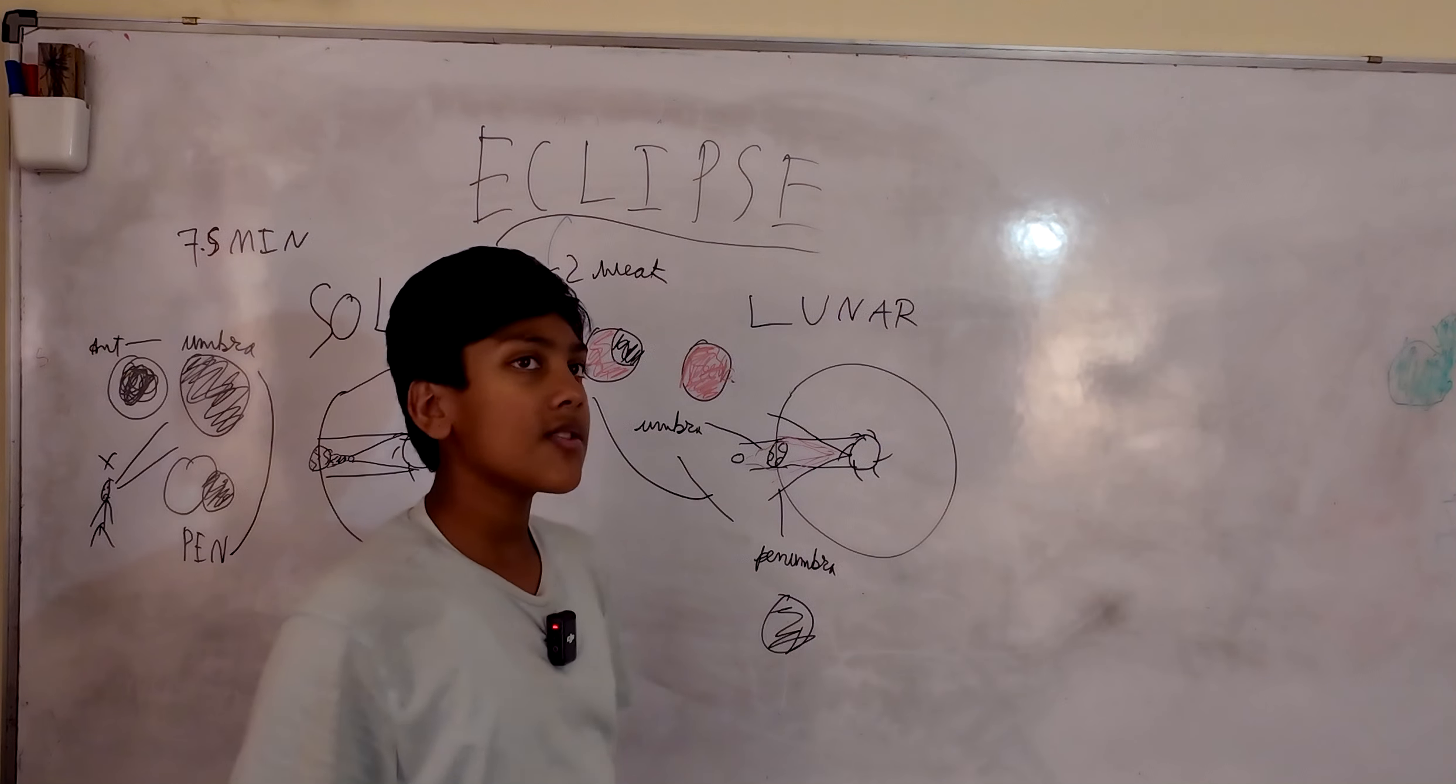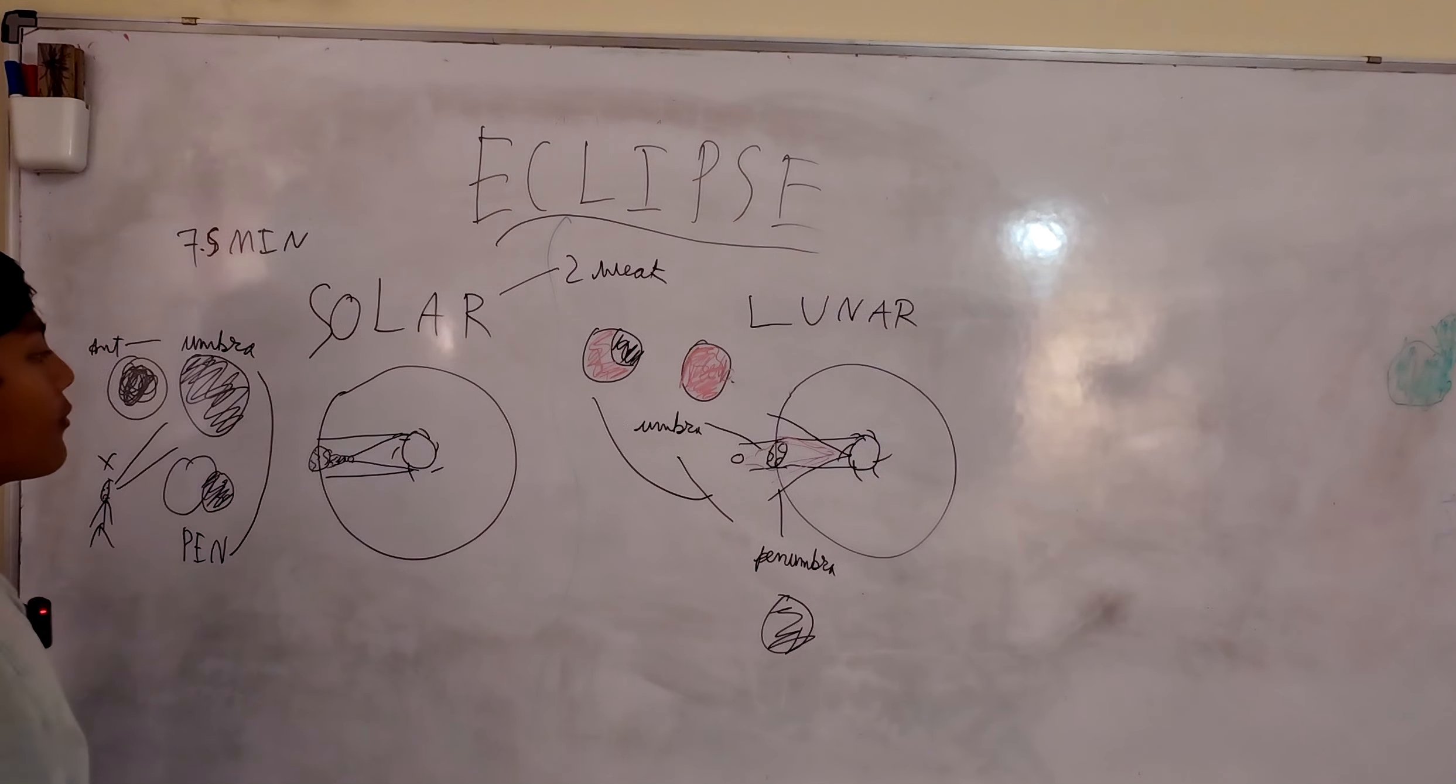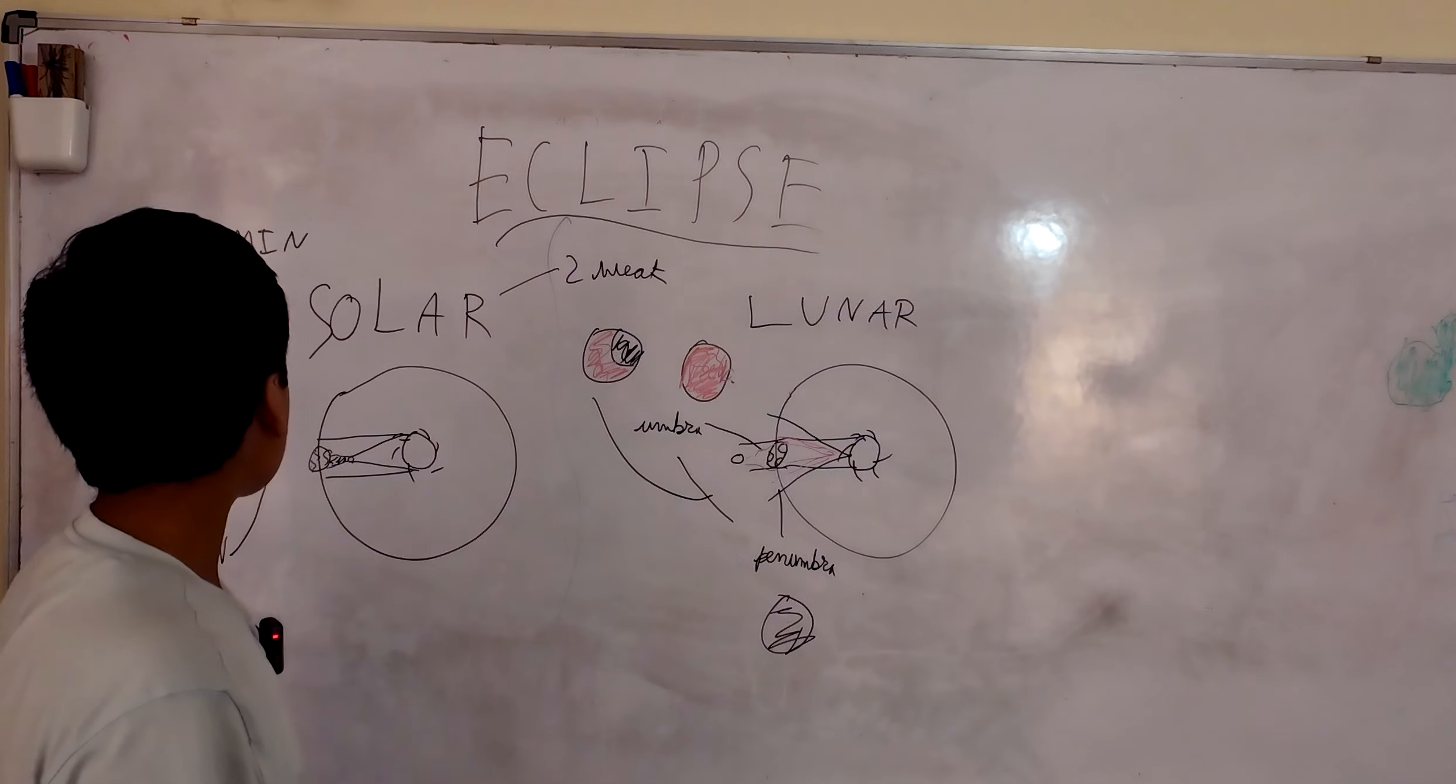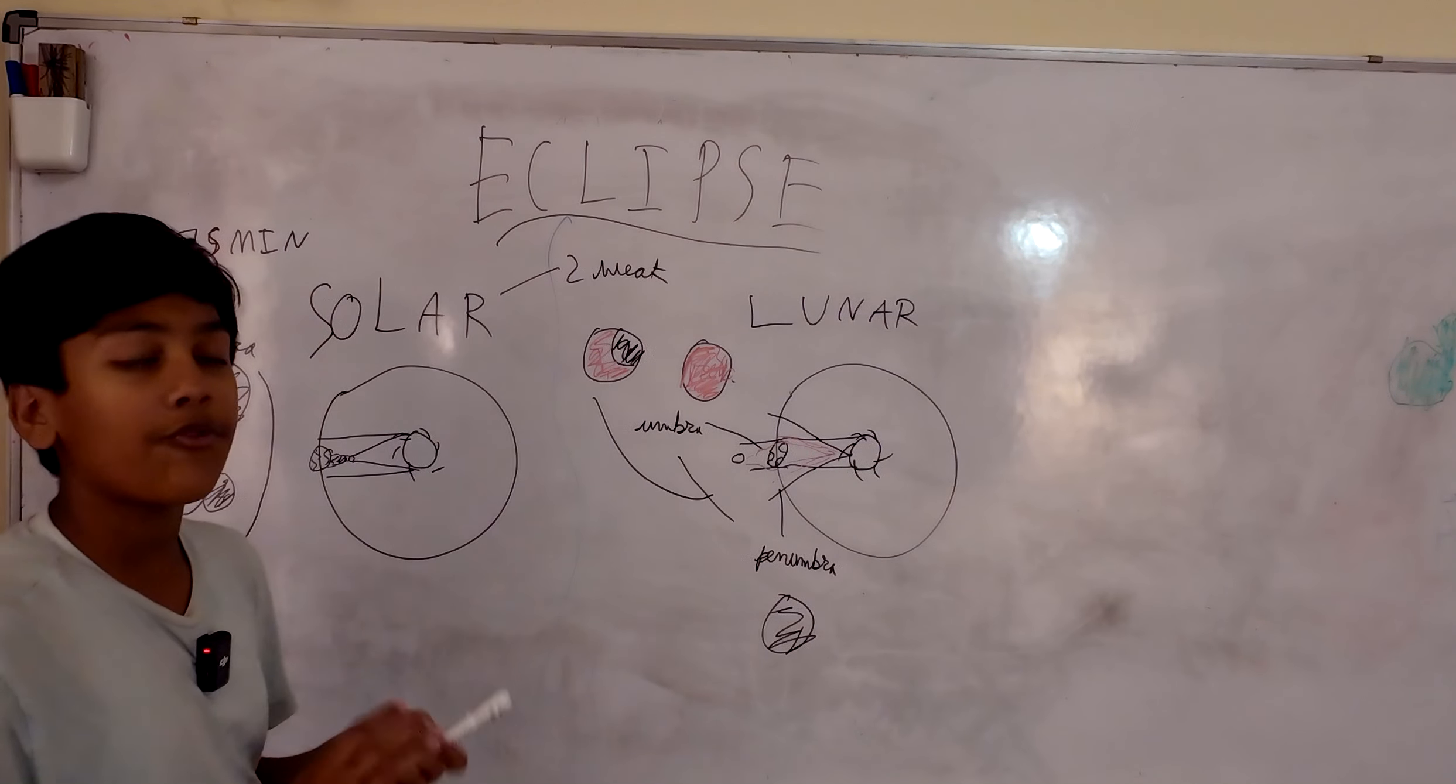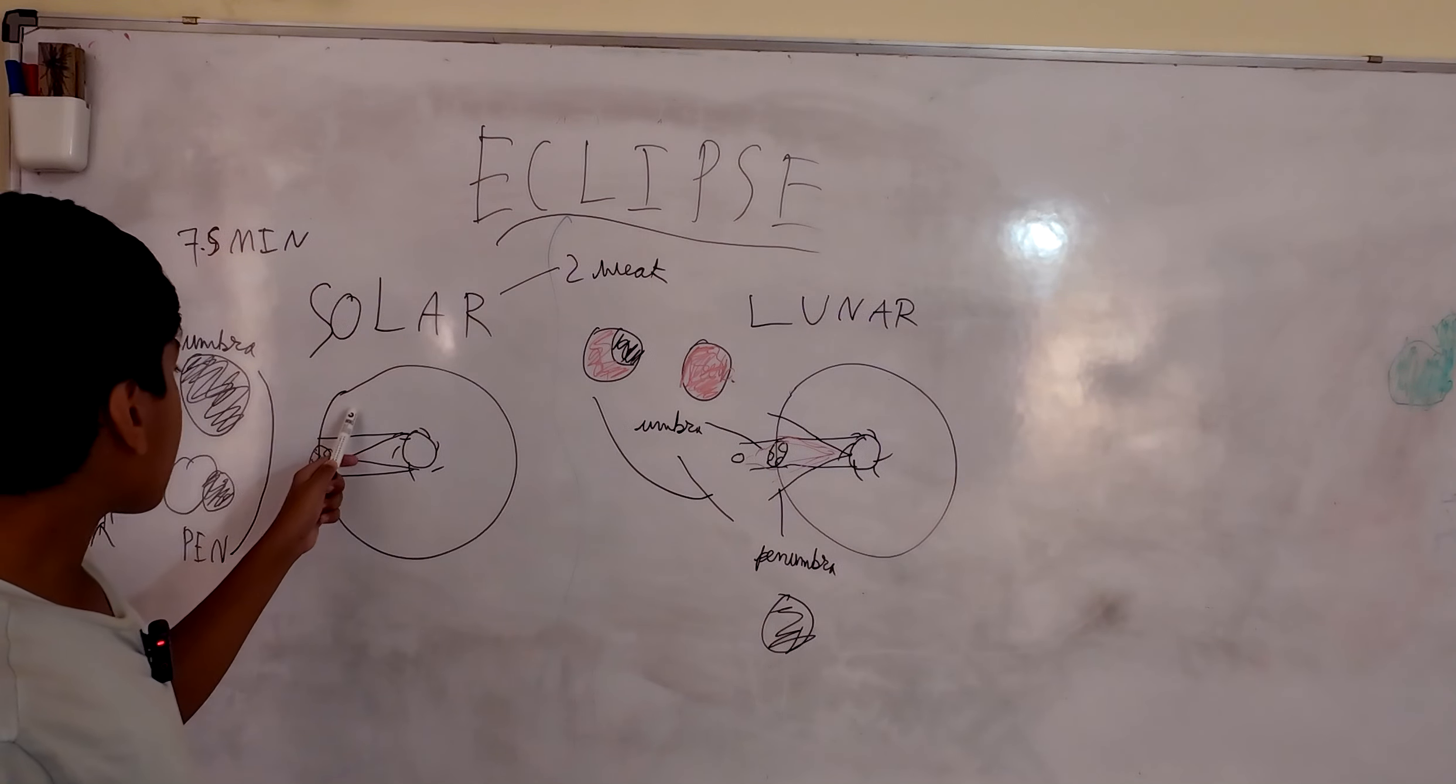And then finally there is the umbra, aka the total eclipse, when the entire moon covers the sun and you can't see anything, just full darkness. And then it moves away.